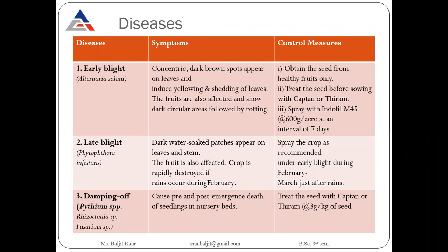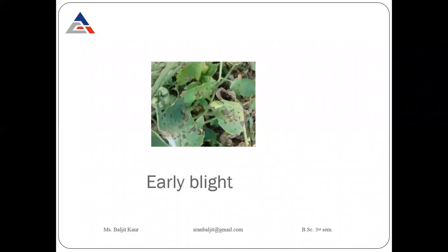Fruits are also affected due to late blight and the crop is destroyed if rains occur after February. To control late blight, spray chemicals like Indofil. Then damping off causes pre- and post-emergence death of seedlings in the nursery beds. This disease is very harmful during the nursery period. To control damping off, the seed should be treated with Captan or Thiram at the rate of 3 grams per kg of seed.